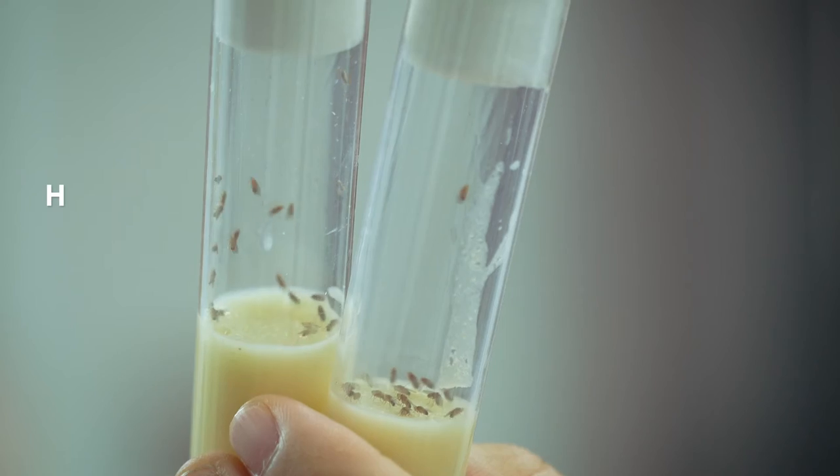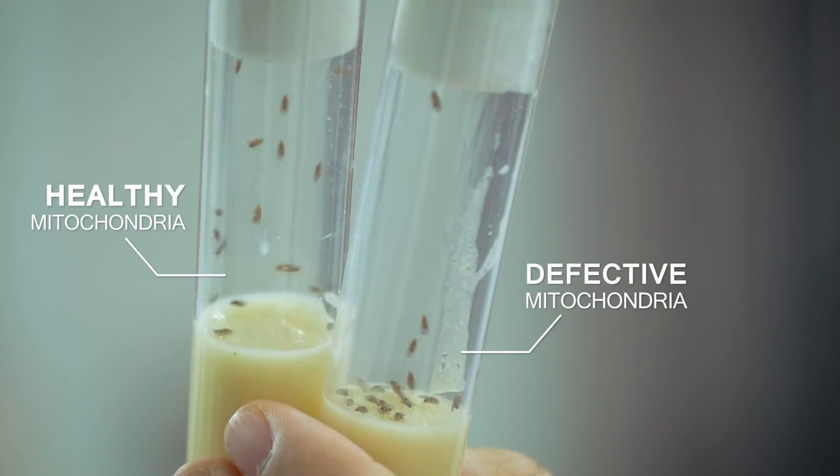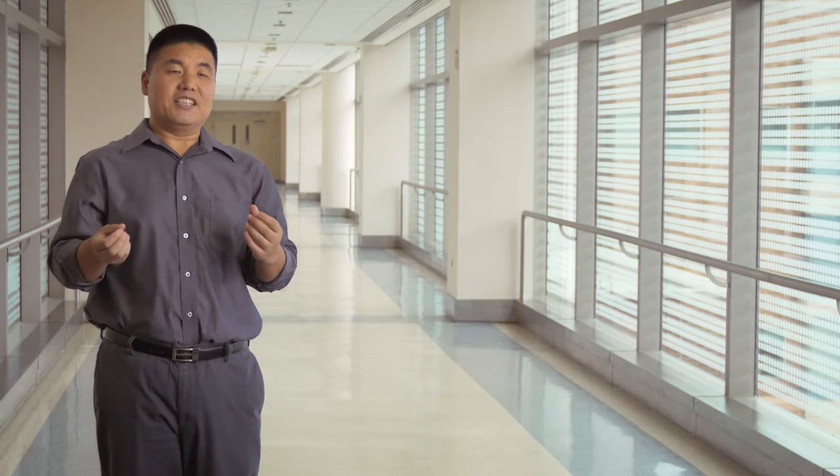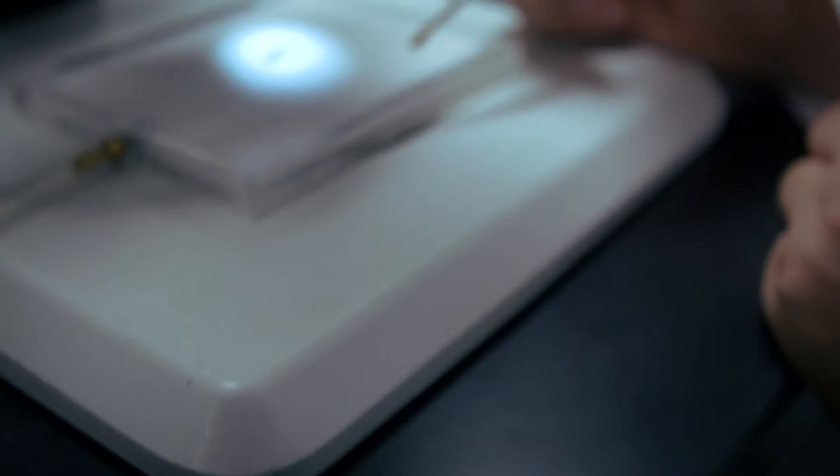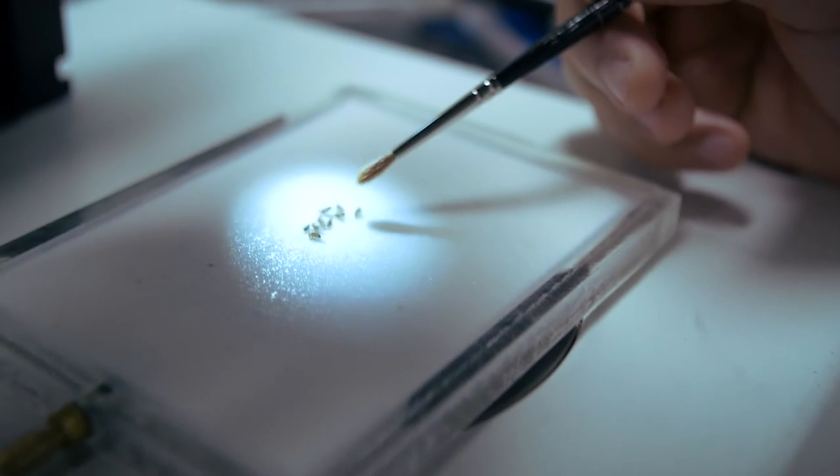Fruit flies are a great model because the basic rules of mitochondrial DNA inheritance are the same between flies and humans, and also fruit flies are much easier to maintain and grow much faster.